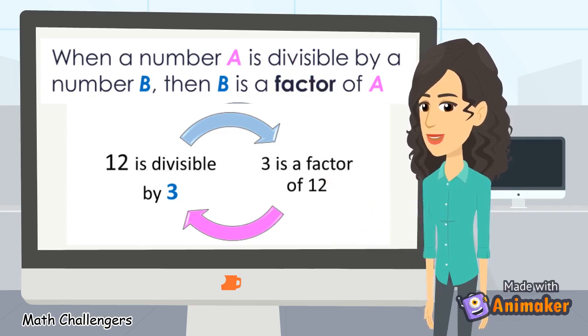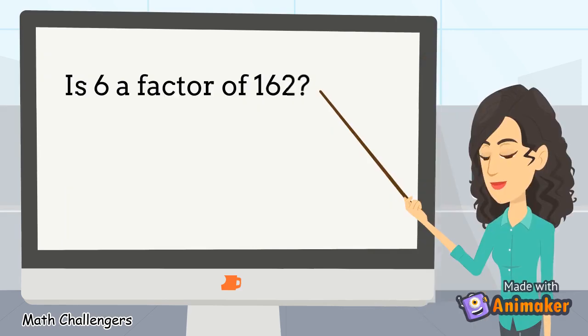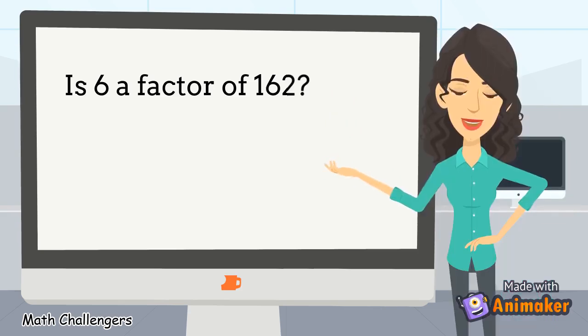So if 12 is divisible by 3, then 3 is a factor of 12. Is 6 a factor of 162? What is the divisibility rule of 6? It must be divisible by 2 and must be divisible by 3. 162 is divisible by 6. Therefore, 6 is a factor of 162. So the answer is yes.